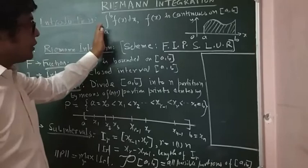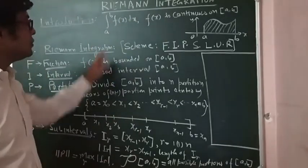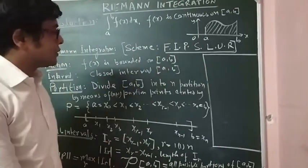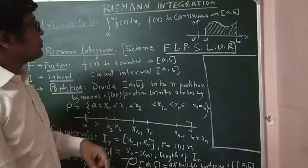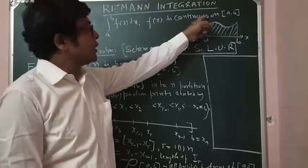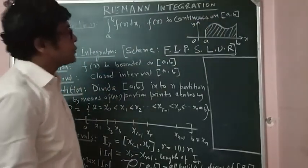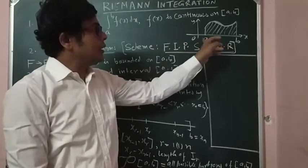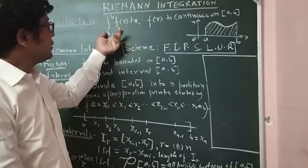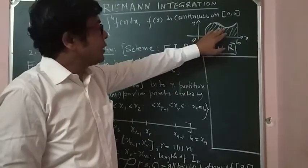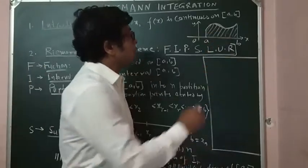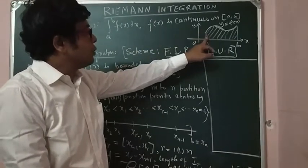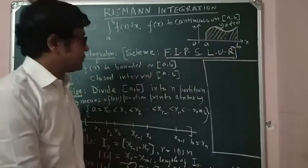What is the introduction? Integration A to B, F(x) dx — all of you know this is integration on A to B. Basically, by our common definition, what you did in the earlier classes, that is up to class 12 level, where F(x) is a continuous function on the closed interval [A, B]. Since F(x) is a continuous function on the closed interval [A, B], I can draw a continuous curve in between A and B. So geometrically, integration A to B F(x) dx represents the area under the curve Y = F(x), and the lines X = A, X = B, and the Y-axis.